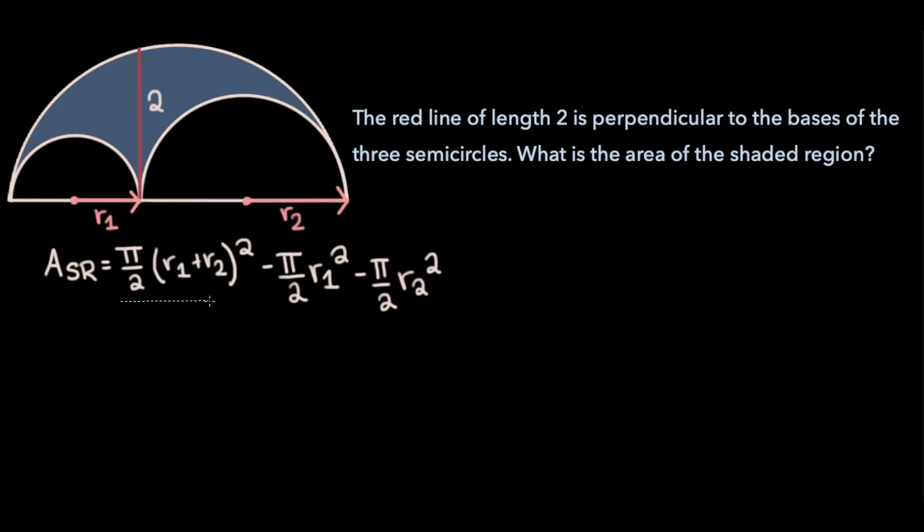Now, if we were to just focus on this term here and expand it, we would get π/2 r1² plus π/2 r2² plus π/2 times 2 r1 r2. Now if we were to plug this expansion back into our formula for the area of the shaded region, notice that these terms cancel, and these terms cancel. And so what we're left with for the area of the shaded region is just this term over here.